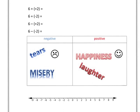Is it the same as improving our life or getting worse? For example, here I'm adding something positive to my life — adding happiness and laughter. Obviously, I'm just adding to my life; it's going to get better. And 6 plus 2 we know is just 8.